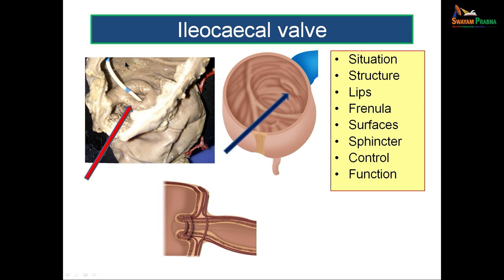The ileocecal valve has two lips: an upper horizontal lip and a lower concave lip. The two ends meet and continue as folds of membrane called frenula. The surface towards the ileum shows features of small intestine including villi, while the cecal surface shows features of the colon with openings of intestinal glands.